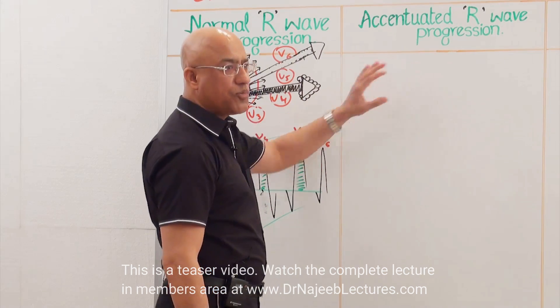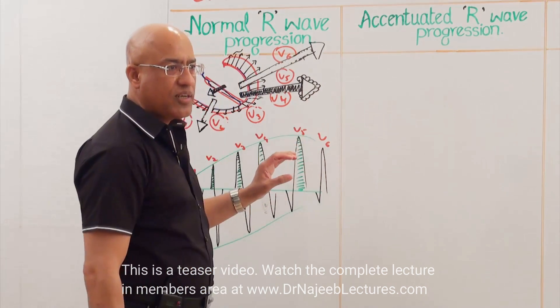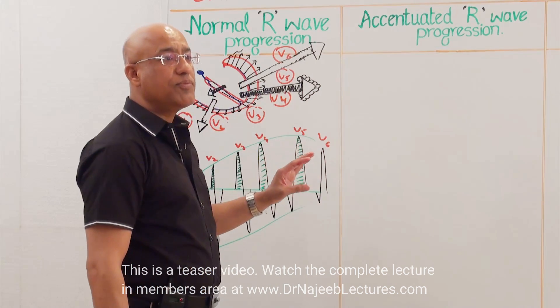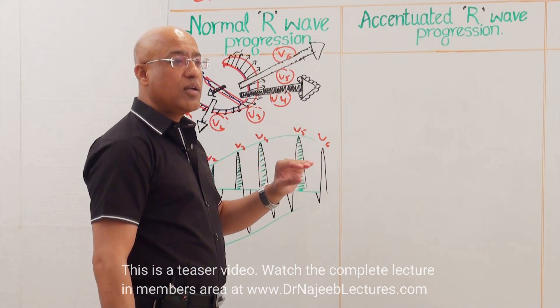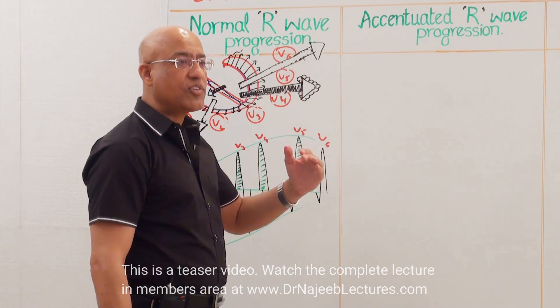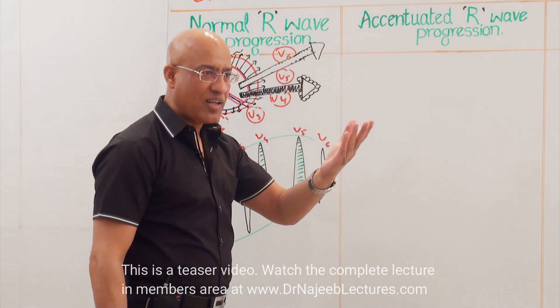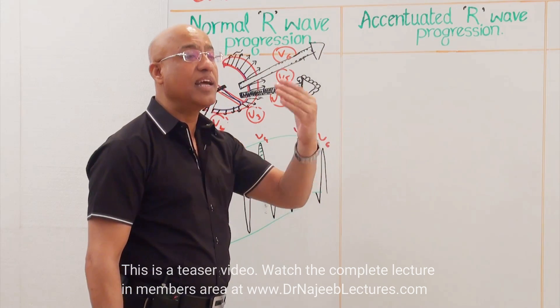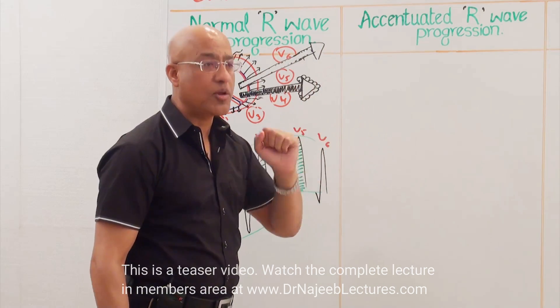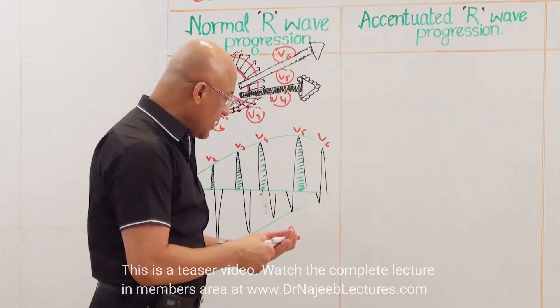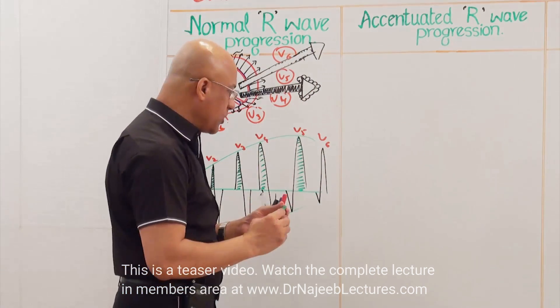In certain conditions, this phenomenon of progressively increasing height of R-wave from V1 to V6 may be altered. If this progression is altered, we say there is an abnormality of R-wave progression. Now we come to one abnormality of R-wave progression where R-wave progression is accentuated — more than normal. I will explain how it happens.